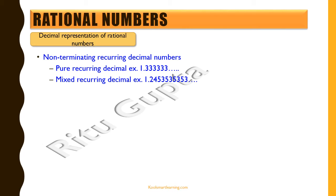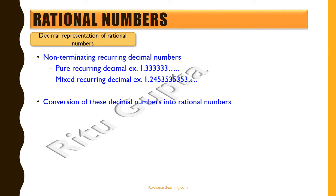In a mixed recurring decimal, some digits occur only once and then stop, and after that certain digits repeat over and over infinitely. Now let's understand why both types of non-terminating recurring decimal numbers are also rational numbers, by converting them into p by q form.